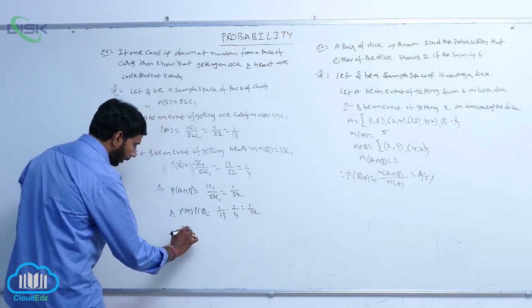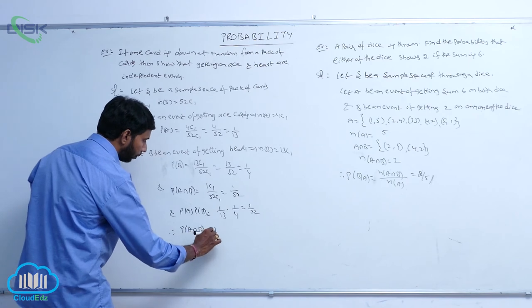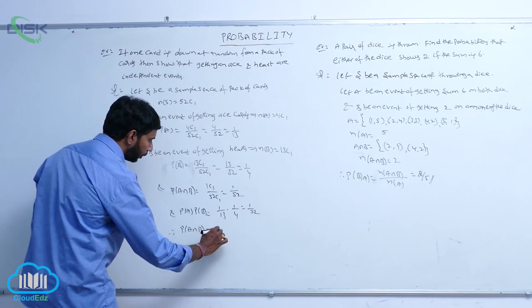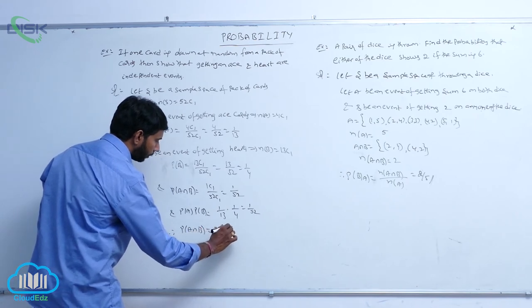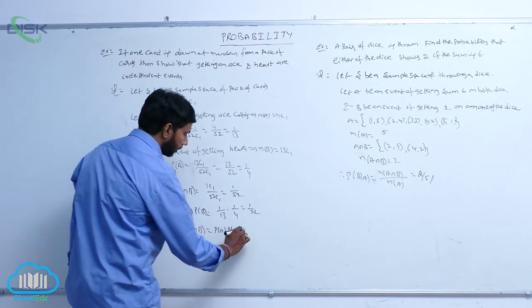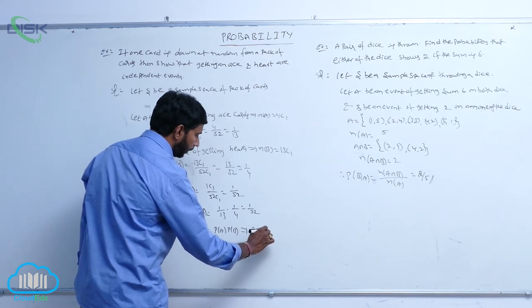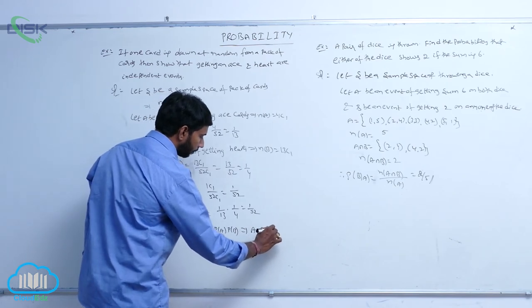Therefore, P(A intersection B) = P(A) into P(B). This implies A and B are independent events.